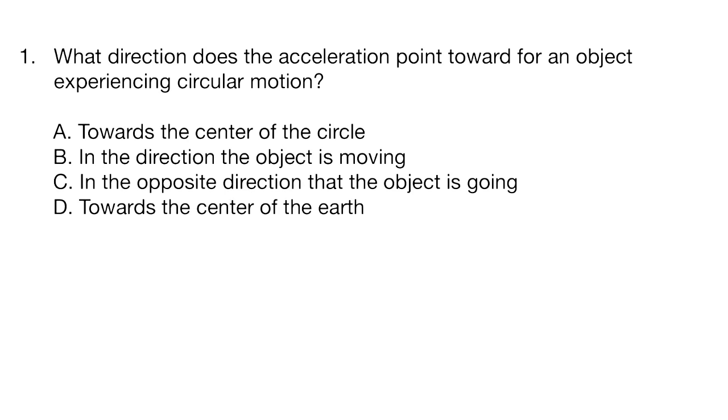So we need to visualize an object experiencing circular motion and I'm going to go with the Earth and the Moon. I know that the Moon travels in an orbit around the Earth and the reason for that is because of Earth's gravity. Earth's gravity is constantly pulling the Moon towards itself.